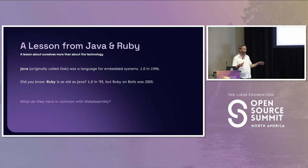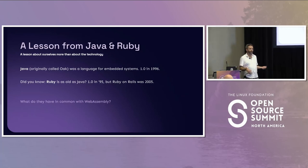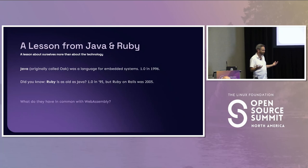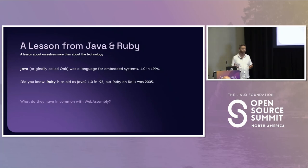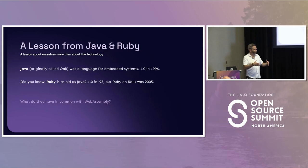If you went to any of the early Java stuff, they would be talking about the Java ring. I was at the conference where they unveiled the Java ring. I'm still not entirely sure what we were supposed to do with it, but it was so cool — you can get a VM on top of a ring. So Java was very narrowly focused originally on building an embedded language.